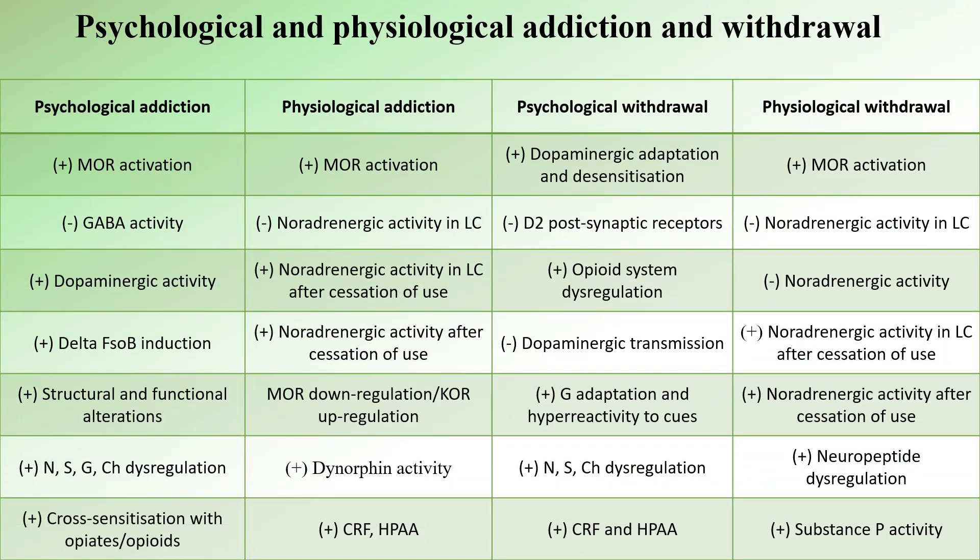Now let's look at the neurobiological mechanisms underpinning the development of psychological and physiological addiction and withdrawal on Kratom. Note this section is based mainly on assumptions due to limited research, drawing from our knowledge of addiction from other opioids. Like other opioids, Kratom activates mu opioid receptors, resulting in a sudden decrease in GABA activity, which in turn leads to increased dopaminergic activity. Prolonged continuous Kratom abuse can sustain this heightened dopaminergic activity, resulting in increased delta FosB protein induction within the nucleus accumbens dopaminergic neurons, causing structural and functional brain alterations.